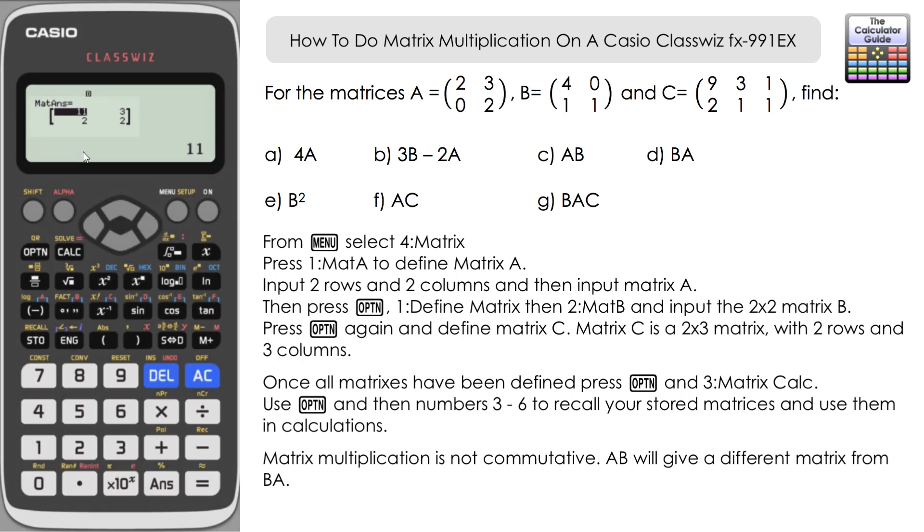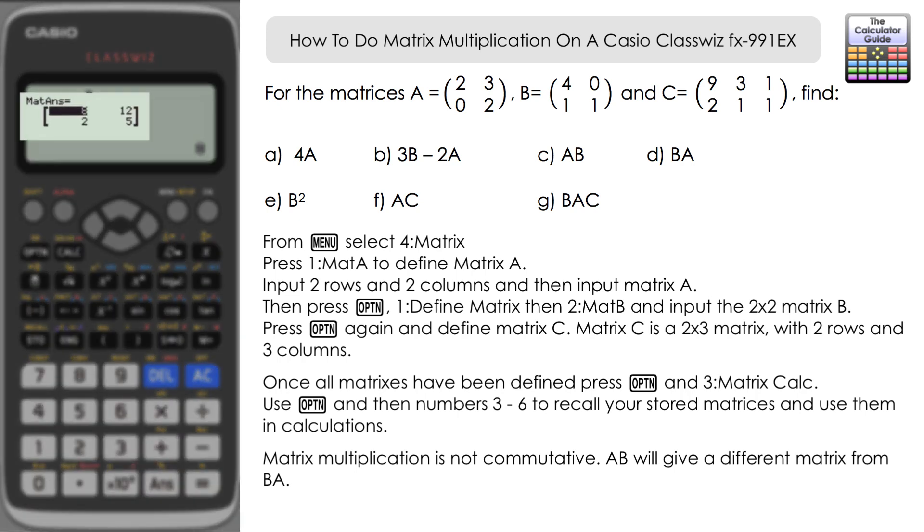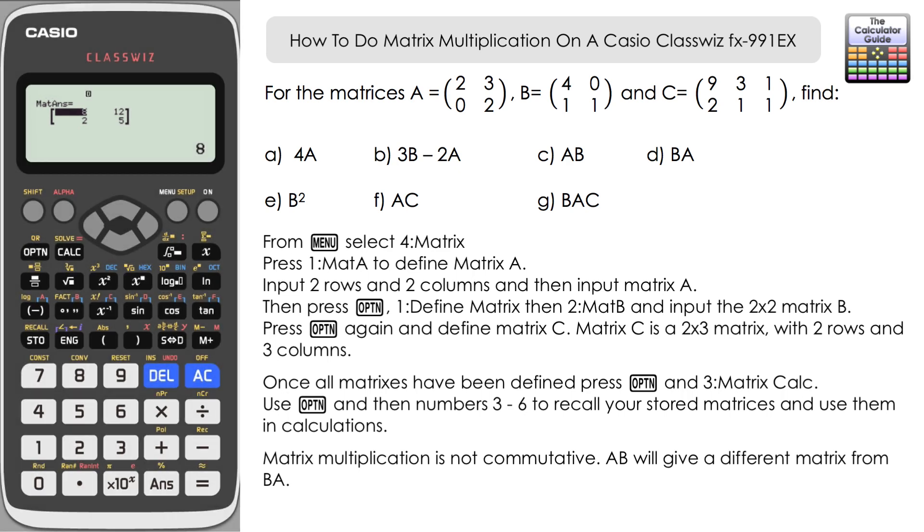Let's just try that the other way around then. So it's option 4 for matrix B, and then option 3 for matrix A. And you can see that we've got a different answer here because it's not commutative. So 8, 12, 2, and 5.